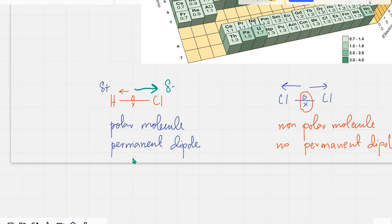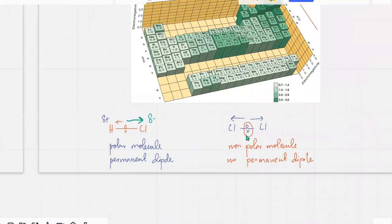That results in a polar molecule — that's known as a permanent dipole. This side would be positive, this side would be slightly negative. Sometimes there's not going to be any electronegativity difference — that results in a non-polar molecule. If you have both Cl atoms, they both pull the electrons with equal force, so the electrons stay right in the middle, like a tug of war. The forces of attraction cancel out and it's going to be completely non-polar.